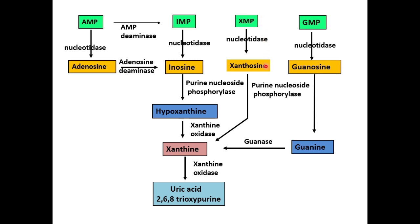One additional step is xanthine monophosphate (XMP), a purine nucleotide. With the enzyme nucleotidase it forms xanthosine, and then Purine Nucleoside Phosphorylase — the same enzyme used for inosine and guanosine — removes the ribose to form xanthine. Xanthine is then converted to uric acid by xanthine oxidase. This step was omitted from the previous slide to avoid complication.